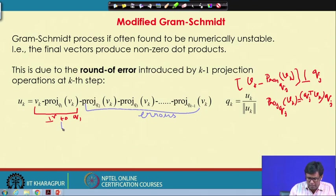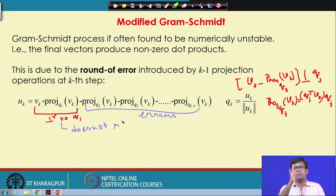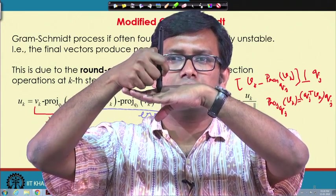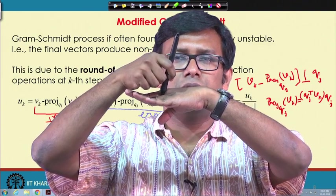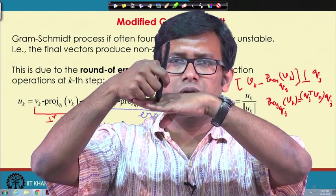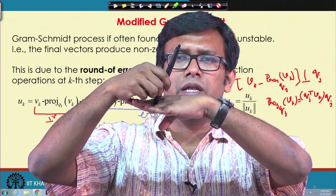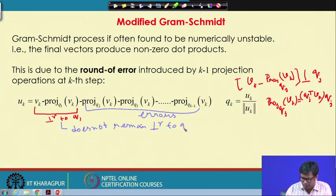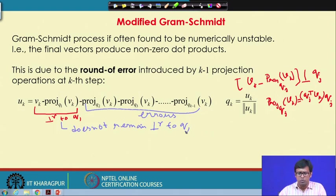Due to these accumulated errors, a vector that should remain perpendicular to Q1 after subtraction may no longer be exactly perpendicular, because the subtracted part contains an error that can perturb the vector in any random direction. As a result, the final set of vectors may not produce zero dot products, meaning they are not truly orthogonal.